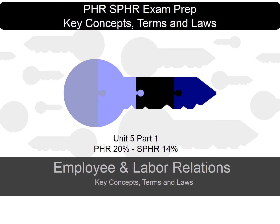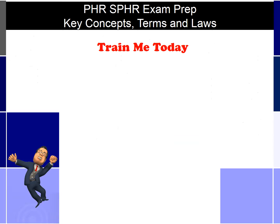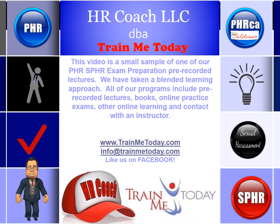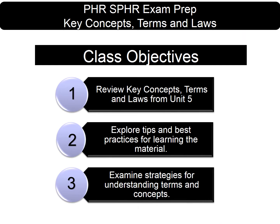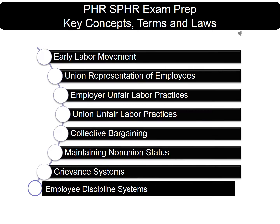Welcome to unit 5 part 1. 20% of this unit is covered on the PHR exam and 14% is covered on the SPHR exam. The class objectives for this lecture are to review key concepts, terms, and laws from unit 5 part 1 compensation and benefits. We will explore tips and best practices for learning the material and examine strategies for understanding terms and concepts.